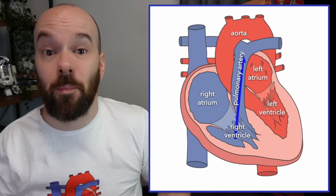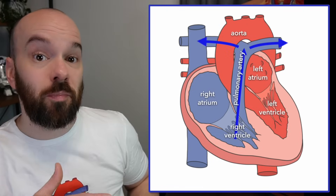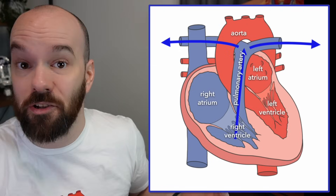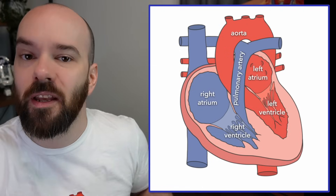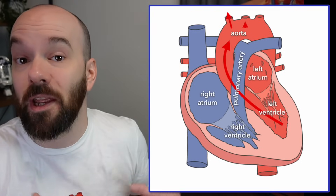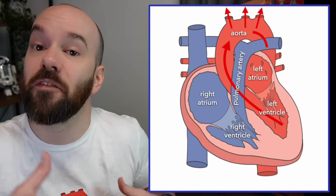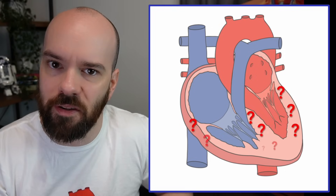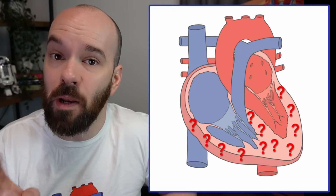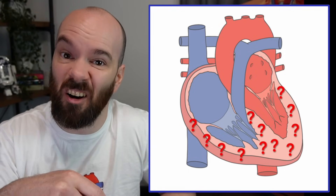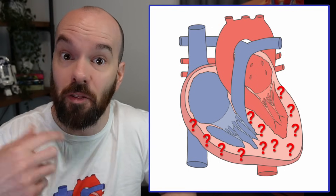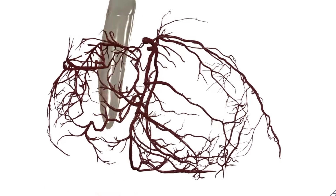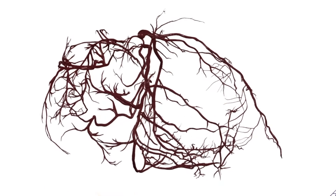The human heart is an amazing organ, but at its core, it's really a pump. It's going to pump low-oxygen blood through the pulmonary artery to get oxygen from the lungs, and pump high-oxygen blood through the aorta to deliver oxygen and other nutrients throughout the body. But what about the heart muscle itself? How do we get that high-oxygen blood into the heart muscle so that it stays healthy and can continue pumping throughout the rest of our life?